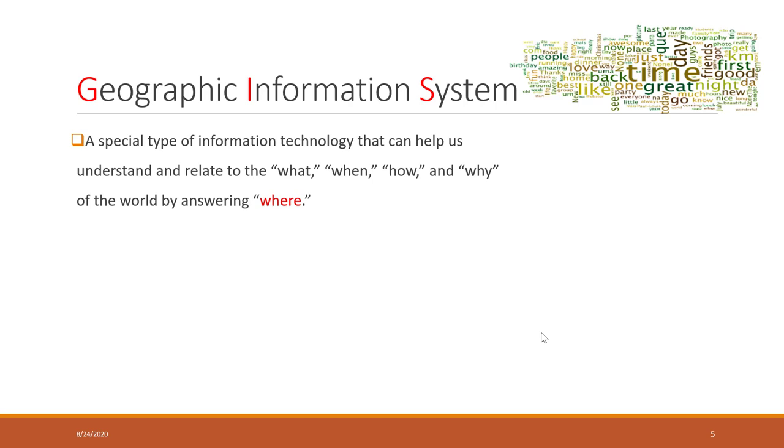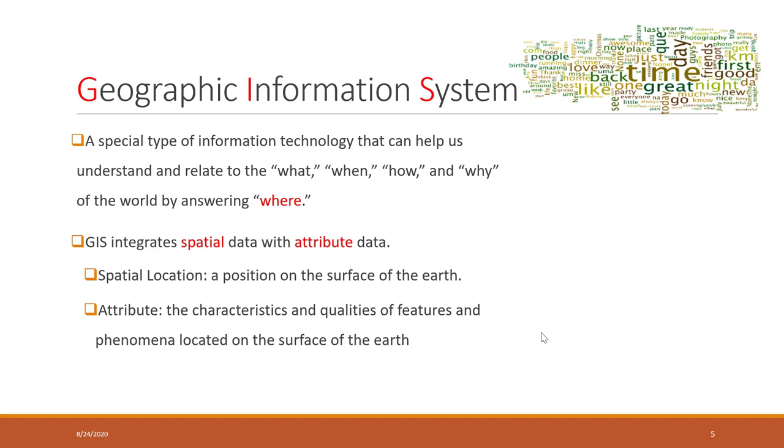GIS focuses on analyzing spatial data. Especially, GIS integrates spatial data with attribute data. Here attribute data means non-spatial data. There are two types of data we can handle in GIS. One is spatial data, talking about the position of objects on the surface of the earth, and also non-spatial data, such as the characteristics or qualities of features. The non-spatial information, for example, a building that has a footprint on the earth - the footprint will be the spatial information, where exactly the building is located, which can be an address or the latitude or longitude of the building.